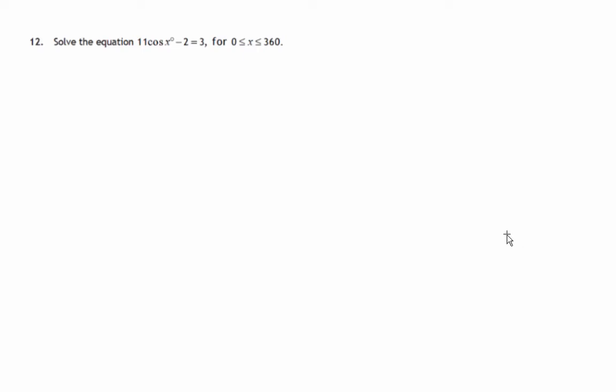This is question 12 from paper 2 of the 2014 National 5 Maths exam. We were asked to solve an equation 11 cos x minus 2 equals 3, and we're given a range of values for x. x has to lie between 0 and 360.